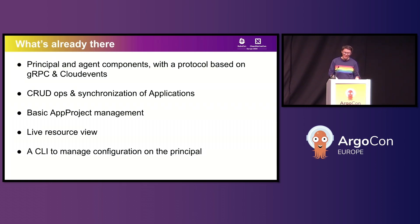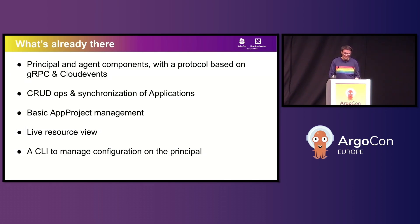The project also supports basic synchronization of app projects. I say basic because right now all app projects managed on the principal will be synchronized to all of the agents rather than a particular one — we're aware this is not optimal but we have plans to change it. Another problem we've solved is the live resource view — you'll be able to view live resources from the agent systems on the principal all in one place, just like a regular vanilla Argo CD setup. Finally, we provide users with a CLI to manage certain aspects of configuration on the principal, like agent credentials. Right now it's just a little more than a proof of concept, but we have big plans for the near future.